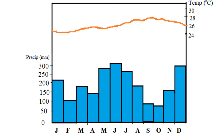Notice also on the graph that there are two periods of heavier rainfall, which mark the two times that the ITCZ passes over an area — on its way to the north and then on its return to the south.